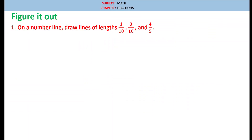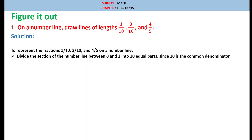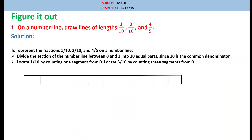Figure it out. Question number 1: on a number line, draw lines of lengths 1 by 10, 3 by 10, and 4 by 5. Solution: to represent fractions 1 by 10, 3 by 10, and 4 by 5 on a number line, we need to divide the section 0 to 1 into 10 equal parts, because 10 is a common denominator. Locate 1 by 10 by counting 1 segment from 0, and locate 3 by 10 by counting 3 segments from 0. The first part is 1 by 10, notated with a red line. Then 1 by 10, 2 by 10, and the third line will be 3 by 10.